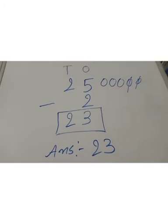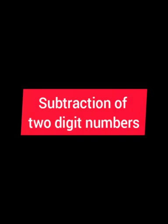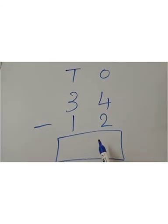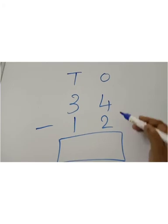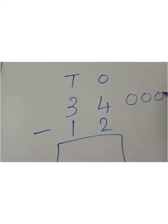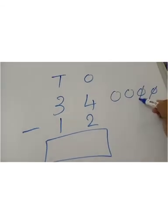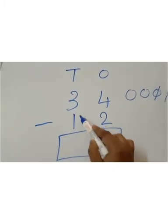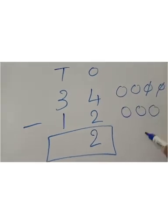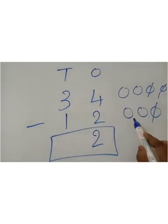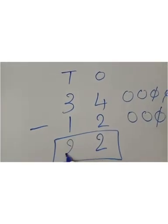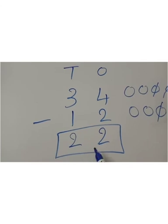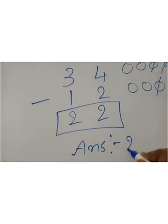Next, subtraction of two-digit numbers. Here we have 34 minus 12. Start with the 1's place: 4 minus 2 — cut 2 numbers — you have now 2. Then the 10's place: 3 minus 1 is equal to 2. So 34 minus 12 is equal to 22. Your answer is 22.